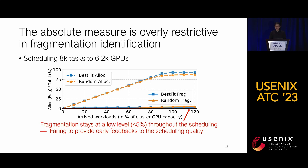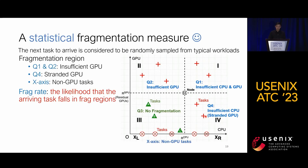Therefore, this is our key contribution: we propose a statistical measure of fragmentation. We consider a node in the cluster at the center of the right figure, with target tasks distributed around it in four quadrants. In the first and second quadrants at the top, arriving tasks cannot be allocated because their requested GPUs exceed the residual GPUs — this is called insufficient GPU. In the fourth quadrant at the bottom right, tasks cannot be allocated due to CPU shortage, so GPU resources are stranded by CPU resources.